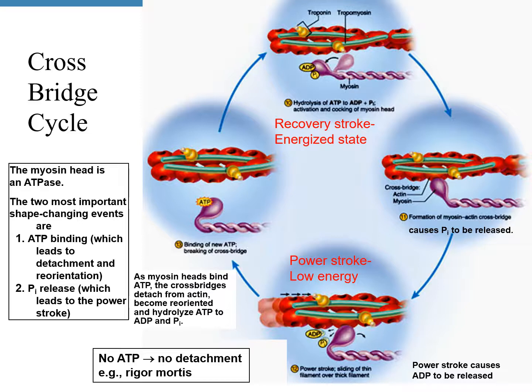The myosin head changes shape again and starts pulling actin, so actin starts sliding over myosin. This process will continue until a new ATP molecule comes and binds with the myosin head, detaching it from the actin again. When a person dies, there are no more new ATP molecules coming, so there is no detachment. Muscles stay in sustained contraction — that is rigor mortis.